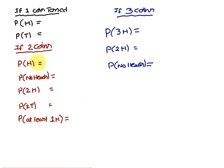Next, some problems. If one coin is tossed, what is the probability of getting a head? Total elements in sample space are two, and head has only one favorable choice, therefore probability of head is 1/2. Similarly, probability of tail is also 1/2.